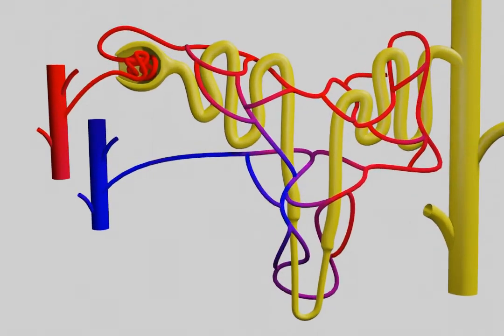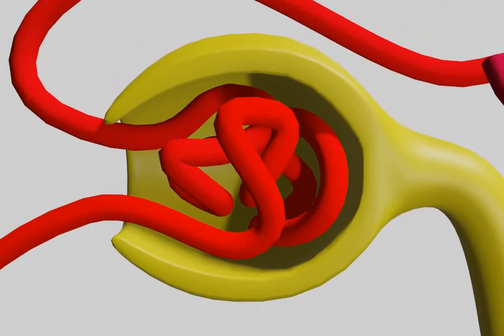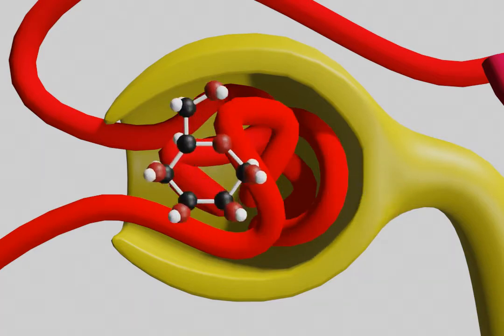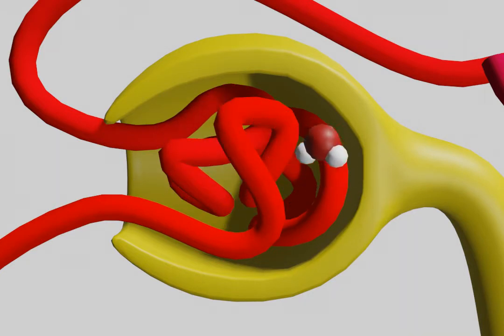Let's take a closer look. In the glomerulus, we're going to filter out potassium, sodium, chloride, ammonia, urea, glucose and some water, and hydrogen ions and amino acids.